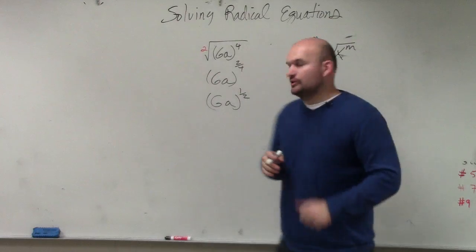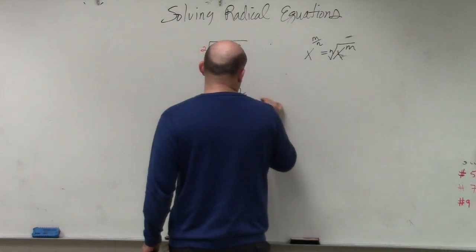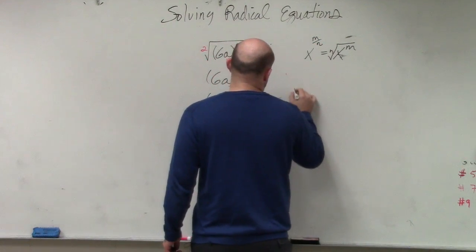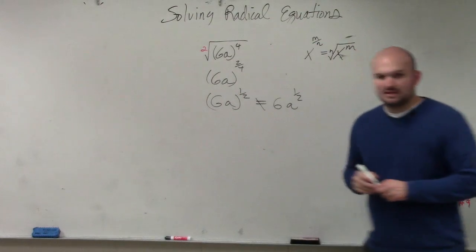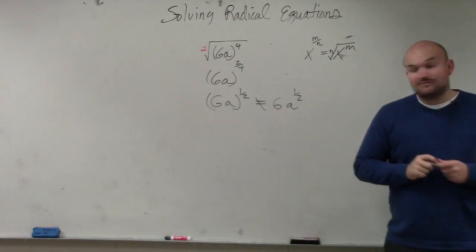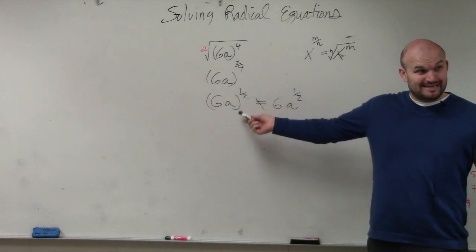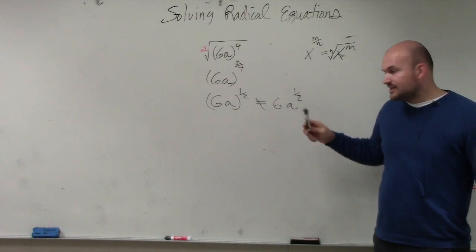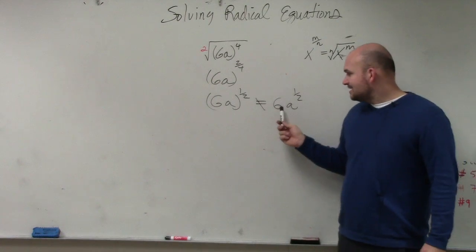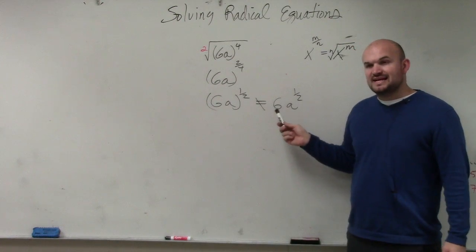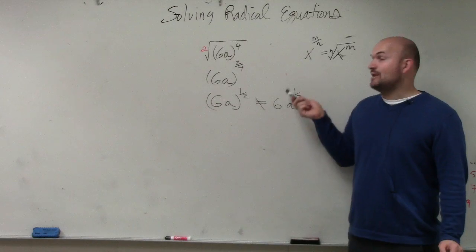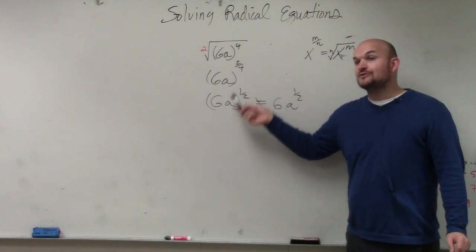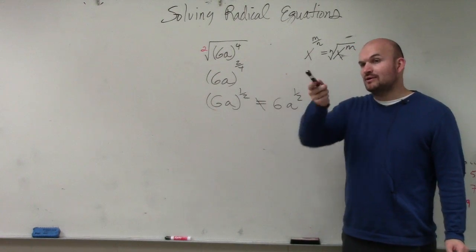The one thing I want you to notice, guys, is that 6a to the 1 half power is not the same as 6a to the 1 half. So if you don't include the parentheses, if you don't keep those parentheses, then the problem's wrong. Because this is 6 times a to the 1 half power, where this is 6 times a to the 1 half power.